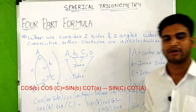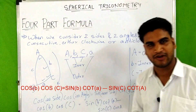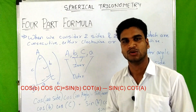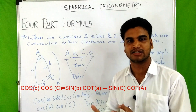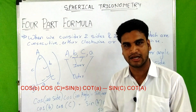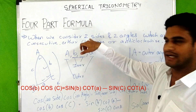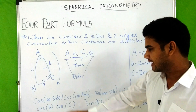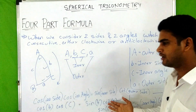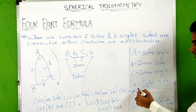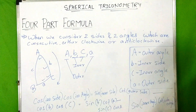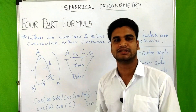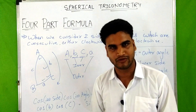So this is how you use the four part formula in spherical trigonometry. To summarize: consider four consecutive parts of a spherical triangle — two sides and two angles — name them as inner or outer, apply the formula, and substitute. Now let's see some numericals based on the four part formula.